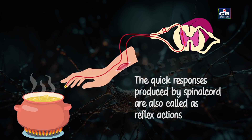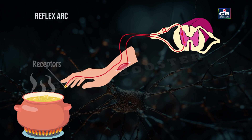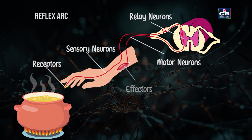A specific stimulus causes a specific response. The components of a reflex arc are: one, receptor — receptors detect the stimulus; two, sensory neurons — they send signals to the spinal cord; three, relay neurons — they process the information; four, motor neuron — they send signals to muscles or glands; five, effector — that is, the muscle or gland that reacts.